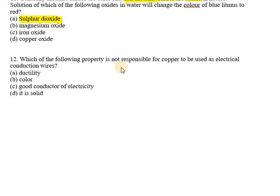Question number 12, the last one: which of the following properties is not responsible for copper being used as electrical conduction wires? Ductility is an important property for electrical conduction wires, so that matters. However, color plays no role in electrical conduction. Therefore, color is the correct answer for question number 12.